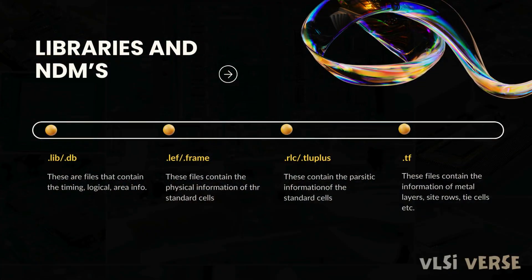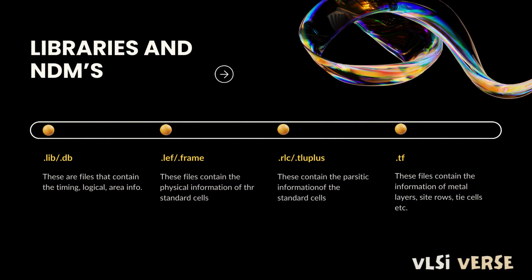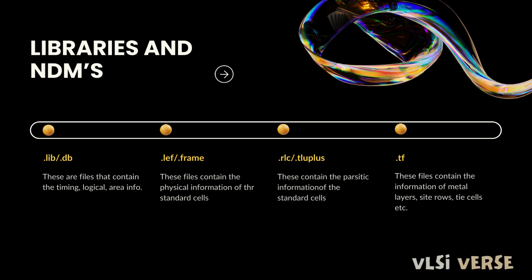Moving on to the types of library files: the .lib and .db files contain the timing, logical, and area information of your design. The .lef and .frame files contain the physical information of the standard cells — for example, the height and width of each standard cell.